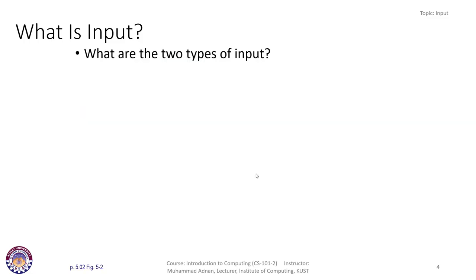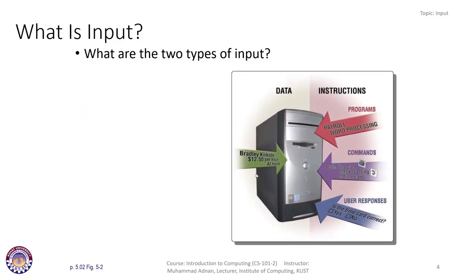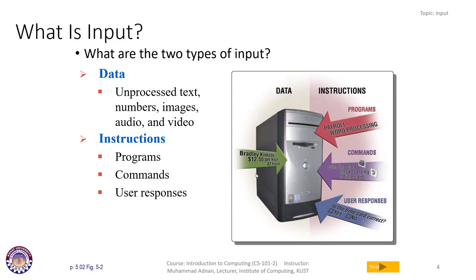The two types of input are data and instructions. Data is unprocessed text, numbers, images, and videos. Instructions are programs, commands, and user responses. Both data and instructions are entered into the computer system. For example, in a payroll scenario, we have programs, word processing programs, commands like print card and check spelling, and user responses.